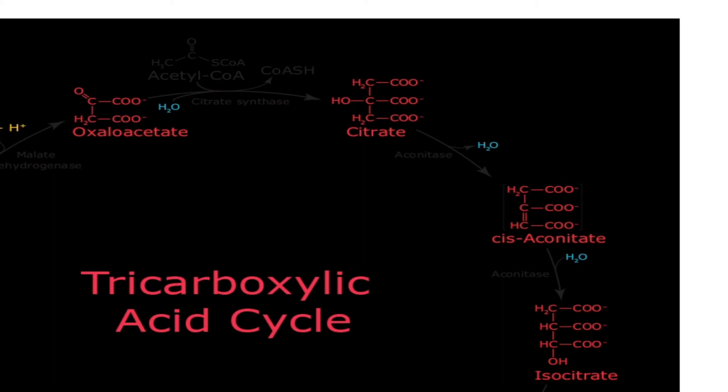This TCA cycle is used for the generation of energy through oxidation of acetyl-CoA. This acetyl-CoA is used for the production of amino acids, and generally it takes place in the cytosol in the case of plant cells. Now we start the citric acid cycle, also known as the TCA cycle or Krebs cycle.